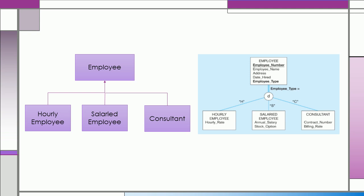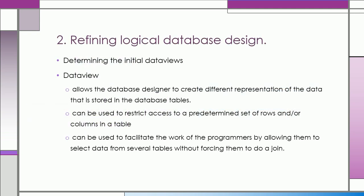The second step of transforming the application data model into a logical database is refining the logical database design. In this step, we determine the initial data views. Data view allows the database designer to create different representation of the data that is stored in the database tables. It can be used to restrict access to a predetermined set of rows and or columns in the table. It can also be used to facilitate the work of the programmers by allowing them to select data from several tables without forcing them to do a join.